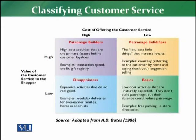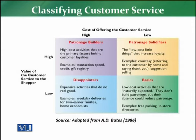This matrix is available in front of us. On the top of the matrix, it shows the cost of offering a customer service. On the left side of the matrix, it shows the value of the customer service to the customer. So on one hand, the cost is the cost of offering that customer service, and on the other hand, the value is the value that the customer is getting.